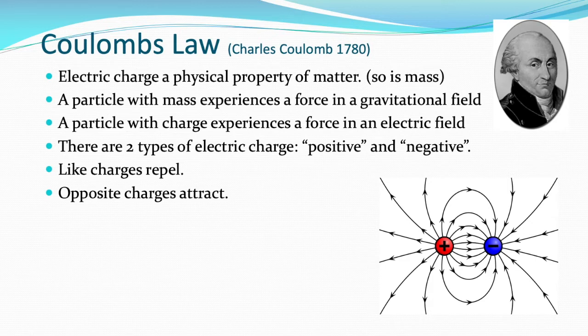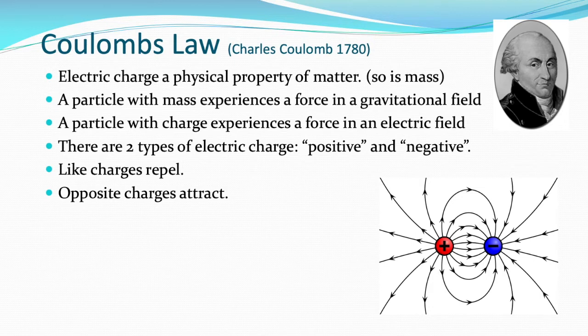The two things to notice about that diagram are that there are arrows on the field lines that show you the direction that a positive charge would move if it was placed anywhere in the region around those charges. The arrows always show the direction in which the force acts on a positive charge. The other thing is the closer together the lines are, the greater the electric field strength or electric field density.